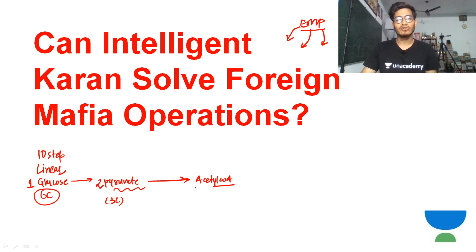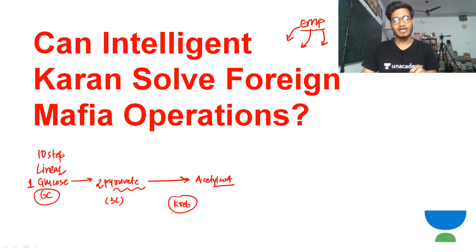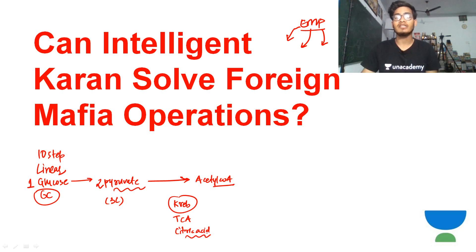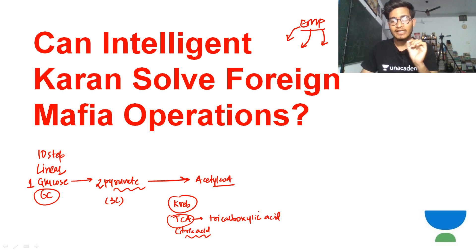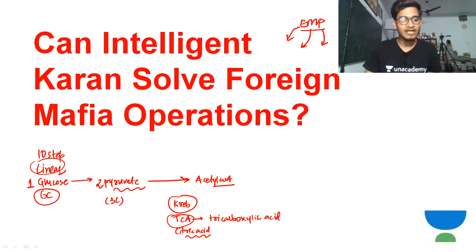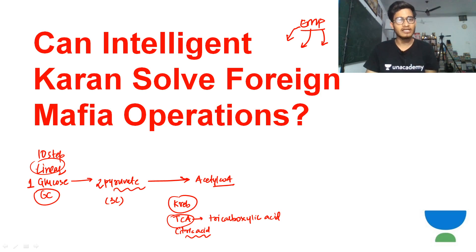Acetyl coenzyme A then enters the Kreb cycle. The Kreb cycle has multiple names - it is called the citric acid cycle because the first compound formed is citrate. It is also called TCA - tri-carboxylic acid cycle. And it is called the Kreb cycle because the scientist who discovered it was named Krebs. Importantly, glycolysis is NOT called the glycolytic cycle - because it is a linear pathway, not circular. Always refer to it as a pathway, never a cycle.